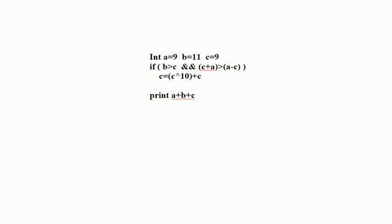The next question is based on pseudocode. The values of p, a, b, c, d are given: b is greater than c, so that condition is true, and c plus a is also true — both sides are true, so it will return true.